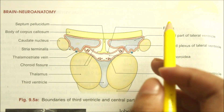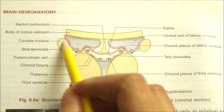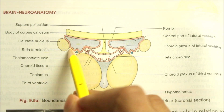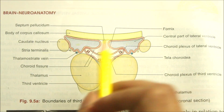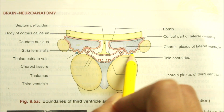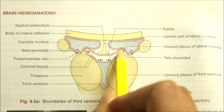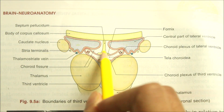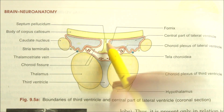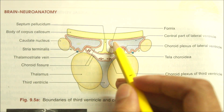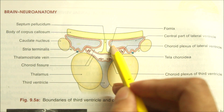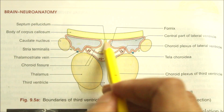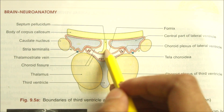The floor of the central part of the lateral ventricle is formed by the body of the caudate nucleus, the stria terminalis, the thalamostriate vein, the choroid plexus, and the upper surface of the symmetric half of the body of the fornix. The medial wall of the central part is formed by the septum pellucidum and the body of the fornix.